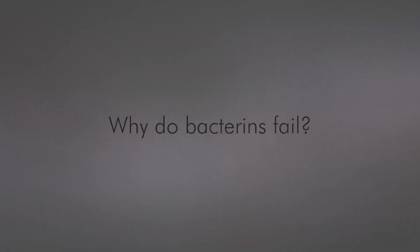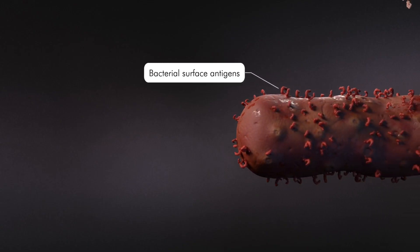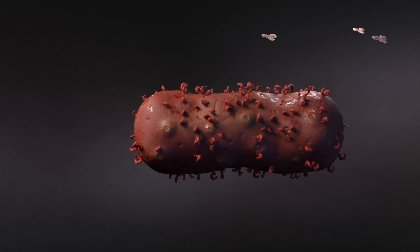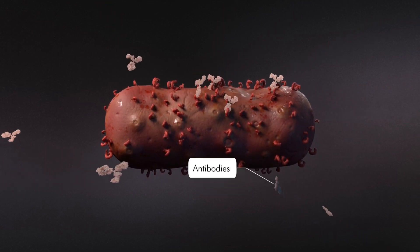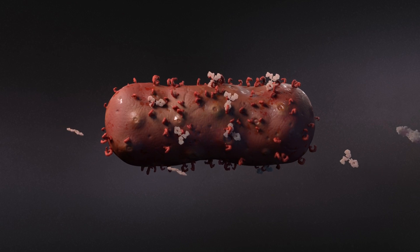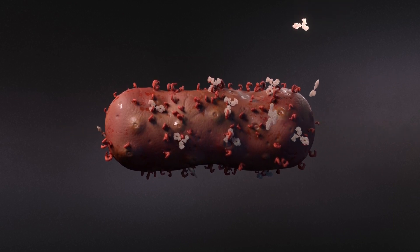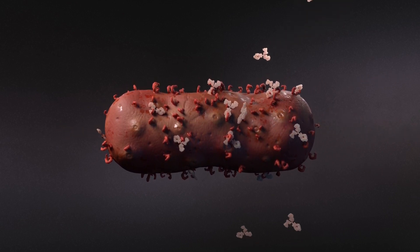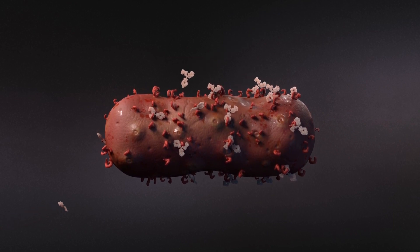Bacterins are killed or attenuated bacteria. They contain bacterial surface antigens that are unique to those bacteria and designed to stimulate the body to produce antibodies against them. When infection occurs, antibodies will recognize the antigens on the surface of the bacteria and bind to them, allowing the macrophages and neutrophils to ingest the bacteria.